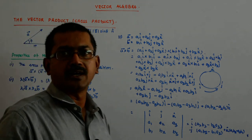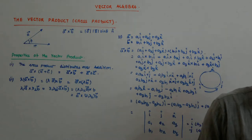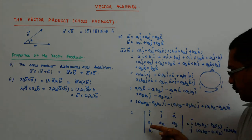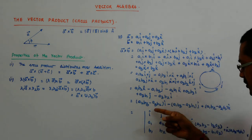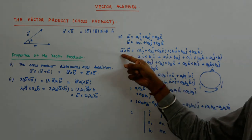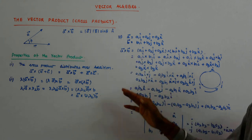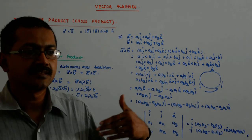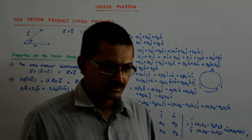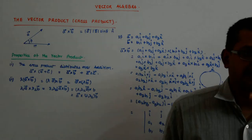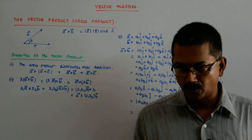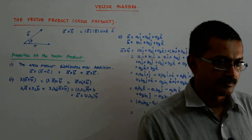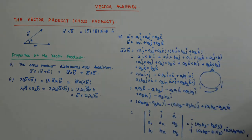So you do not have to memorize the formula — just write it in determinant form: i, j, k in the first row, followed by the coefficients of the first vector in the second row, then the coefficients of the second vector in the third row. The coefficients should correspond — i-coefficient below i-hat, j below j-hat, and k below k-hat.